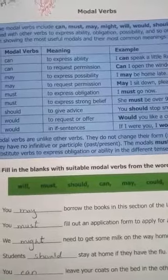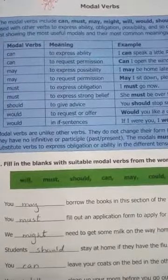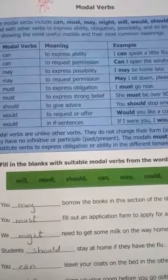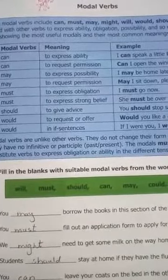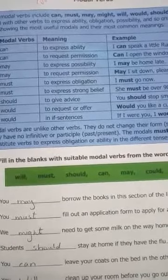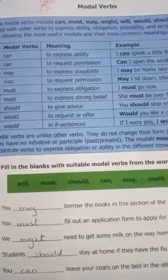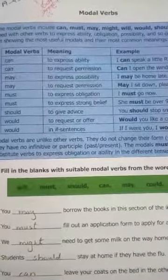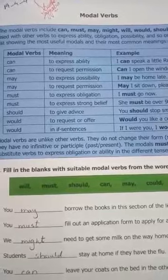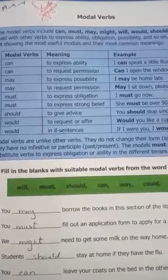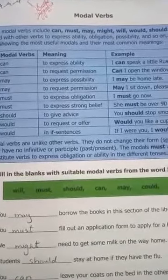The modal verbs include: can, must, may, might, will, would, should. First one — 'can' — to express ability: 'I can speak a little Russian.' 'Can' to express permission: 'Can I open the window?' 'May' to express possibility: 'I may be home late.' 'May' to request permission: 'May I sit down please?'